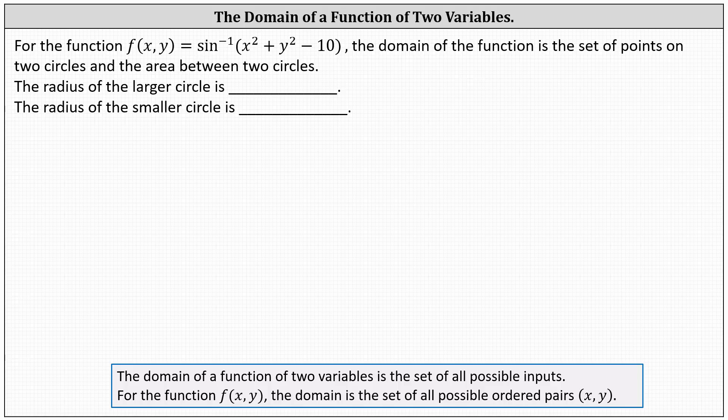For the function f(x, y) = arcsin(x² + y² - 10), the domain of the function is the set of all points on two circles and the area between those two circles. We are asked to determine the radius of the larger and smaller circle.